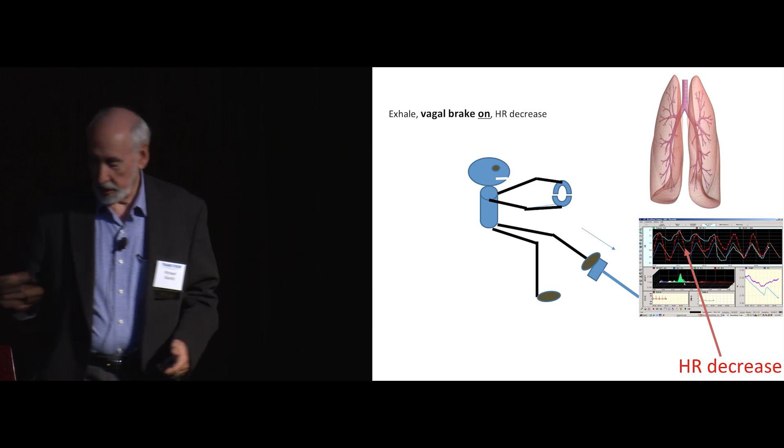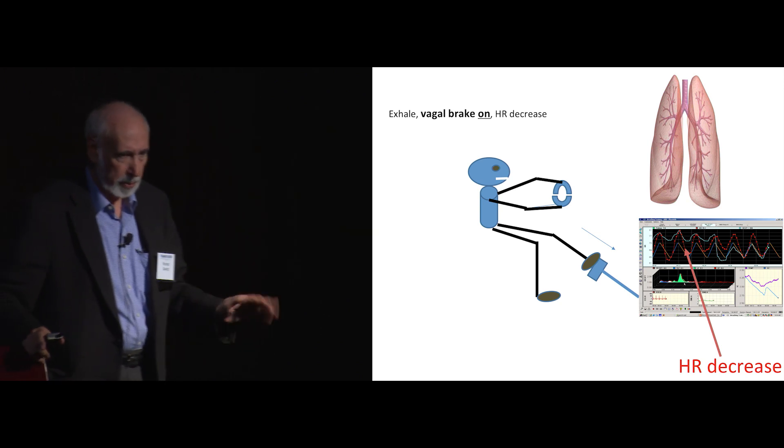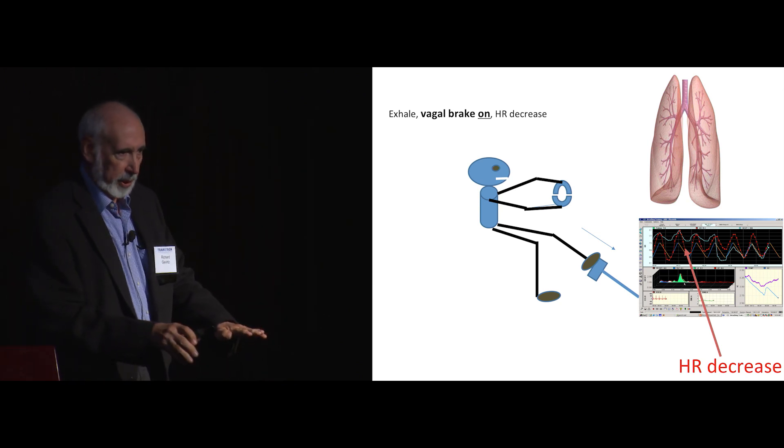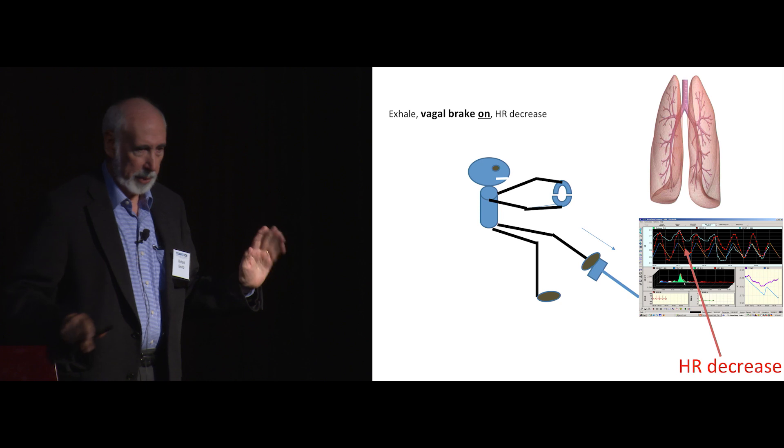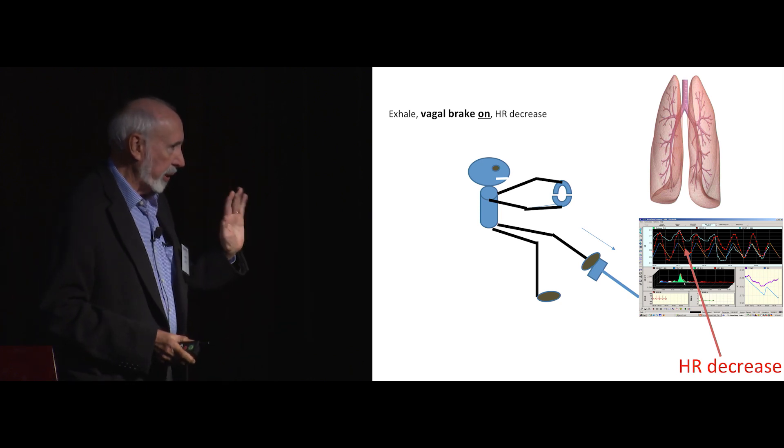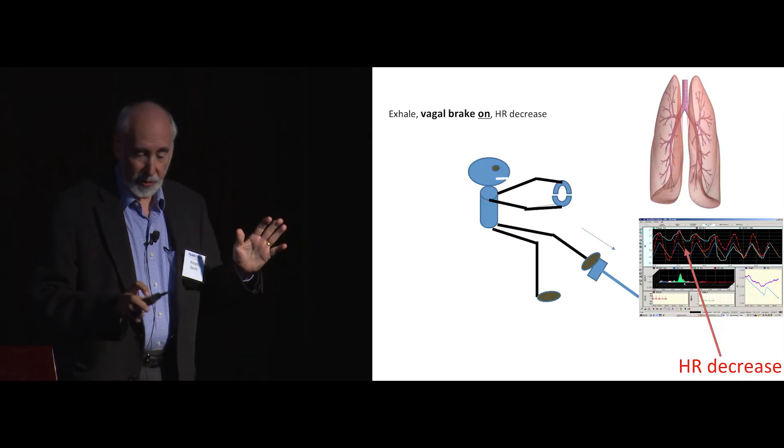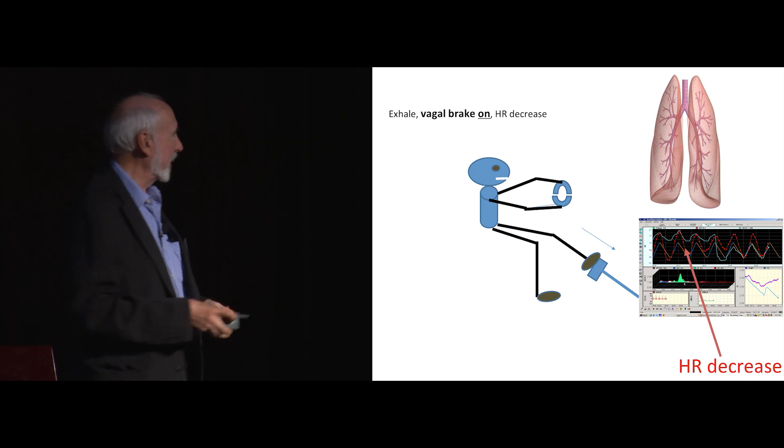So when you breathe in, that takes that brake off, so therefore your heart speeds up. And when you breathe out, the brake goes back on. The vagus goes back on. And if you see the little pattern in the other side of the slide, you can see what happens to heart rate during those different patterns. So it makes a lot of sense because you wouldn't want to have faster heart rate when there's no oxygen present when you're breathing out. And when you're breathing in, you've got lots of oxygen present, so you might as well get the heart speeded up during that period. It actually saves an estimated 350 million heartbeats in a lifetime. And most of us have a finite number of heartbeats, so it's nice to save a few of them.